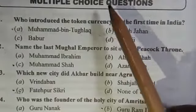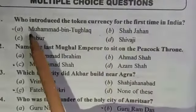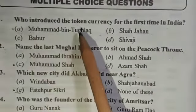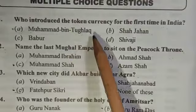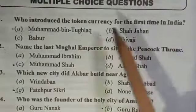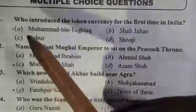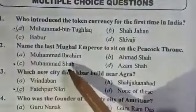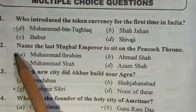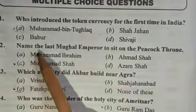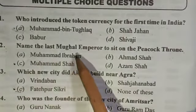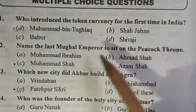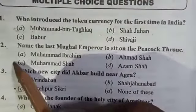Question 1: Who introduced token currency for the first time in India? The answer is Mohammed bin Tughlaq. Question 2: Name the last Mughal Emperor to sit on the peacock throne. The answer is Mohammed Shah.